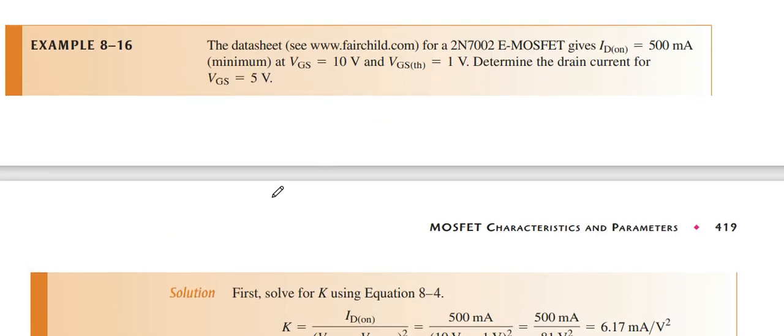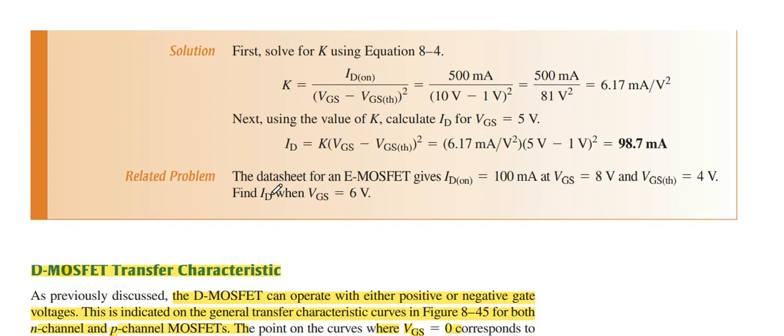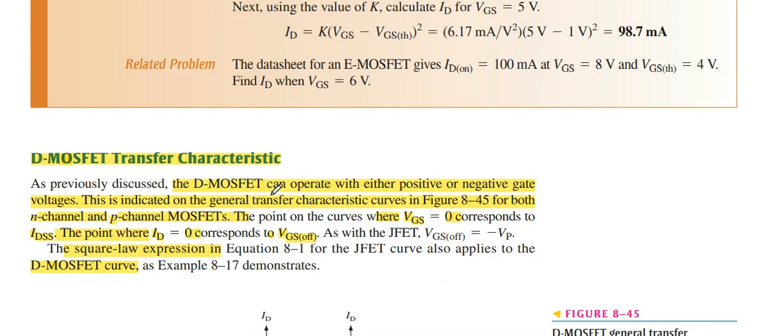K can be given by the data sheet of the MOSFET. The example can be represented. You can solve these examples to understand the E MOSFET.